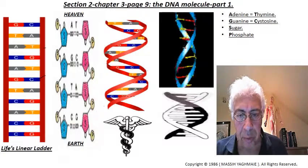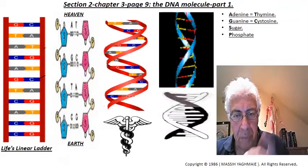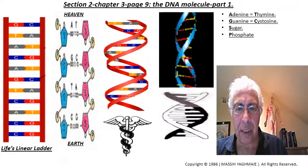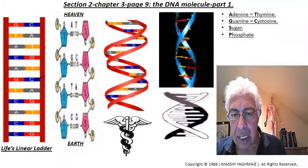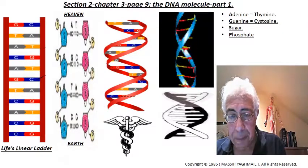It's like a caduceus symbol: one snake is yin, one snake is yang. When they combine together, it creates chi or energy based on Taoism. So everything, even our DNA molecule, is based on Taoism.